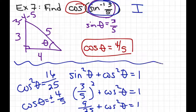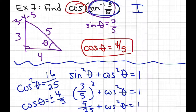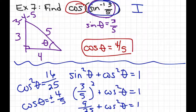Which method should you use? It doesn't matter. You could also just plug it into your calculator — type cosine, inverse sine, 3/5, hit enter, and it tells you 0.8, which using the fraction conversion is 4/5.